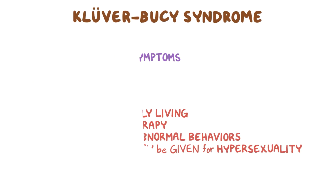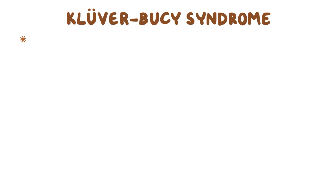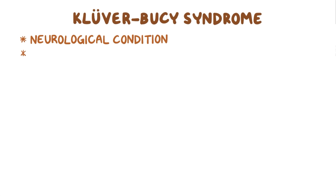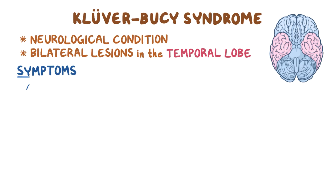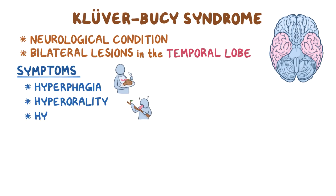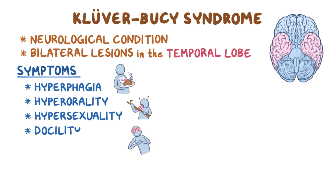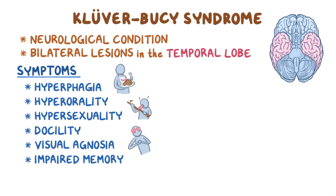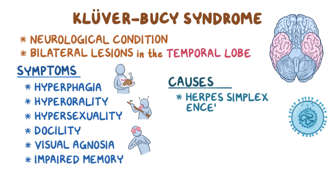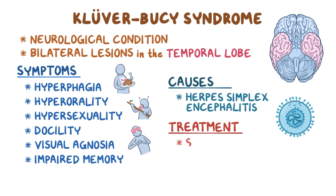As a quick recap, Kluver-Busey syndrome is a neurological condition caused by bilateral lesions in the temporal lobe, and symptoms include hyperphagia, hyperorality, hypersexuality, docility, visual agnosia, and impaired memory. It's associated with herpes simplex encephalitis, and can be treated with selective serotonin reuptake inhibitors and carbamazepine.